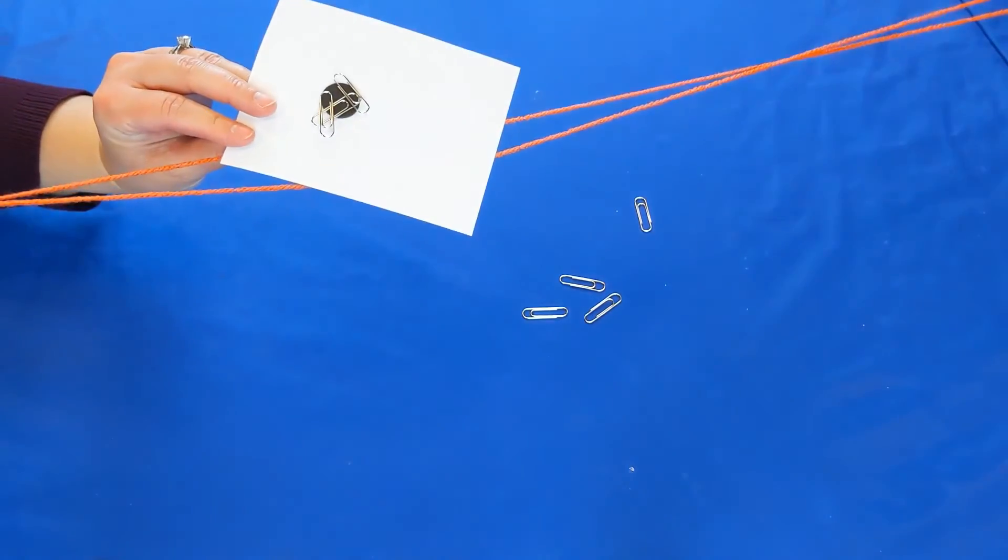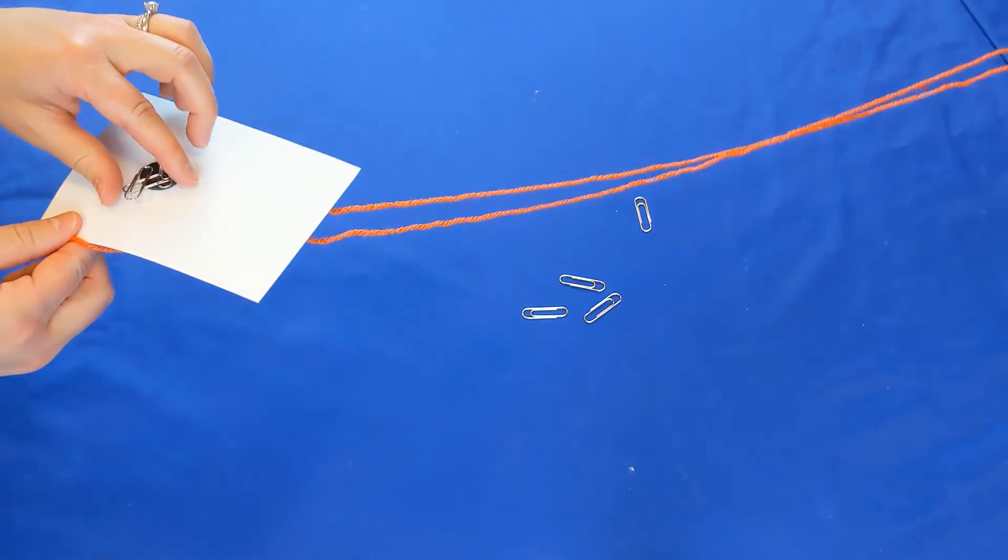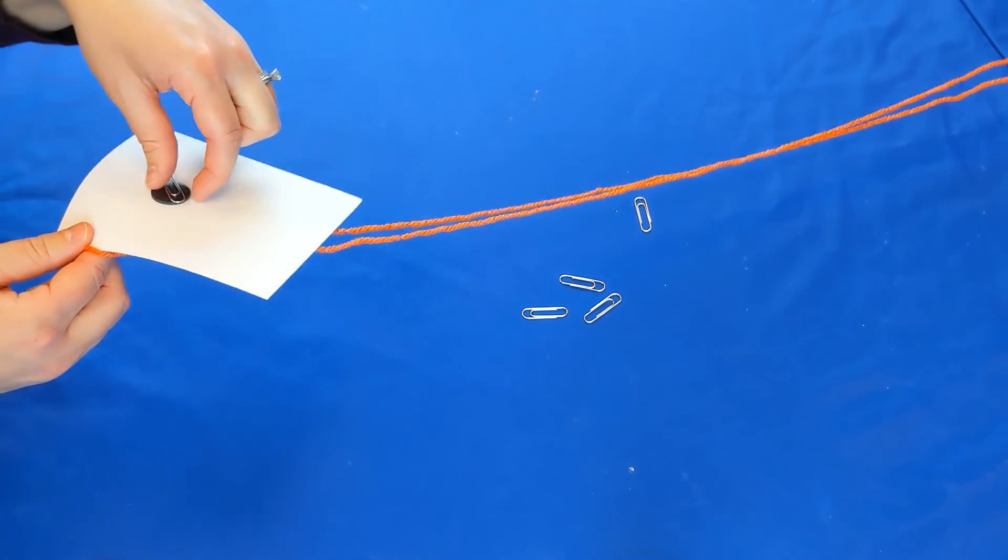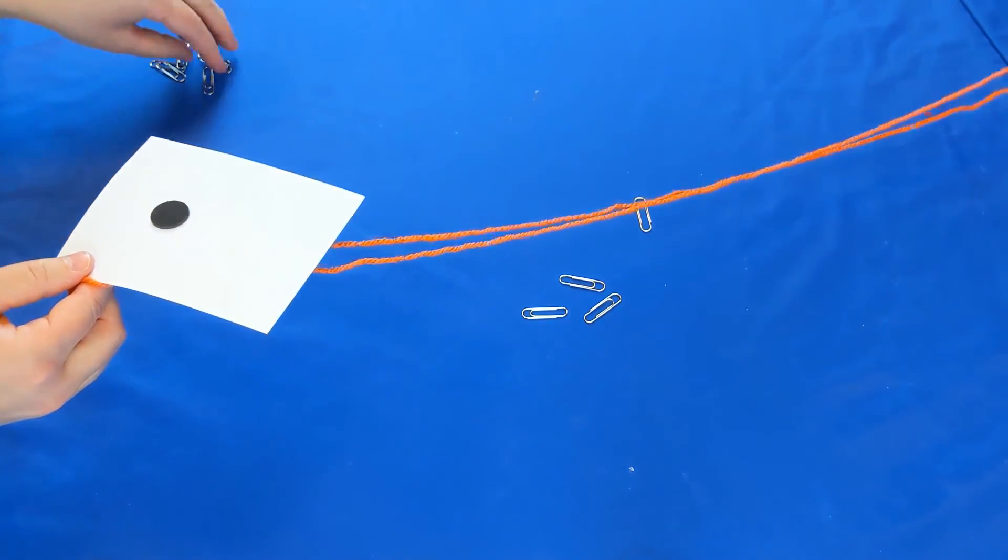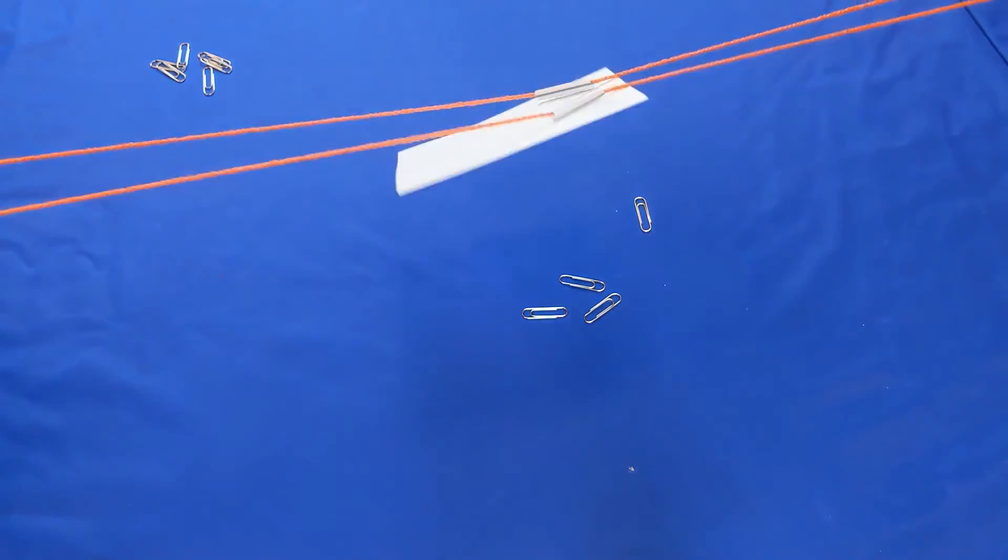Try to think of anything else that you have in your house that you could possibly use for this. What other treasure do you have around that could be picked up by a magnet and your slider? See if you can pick up other things besides just paper clips.